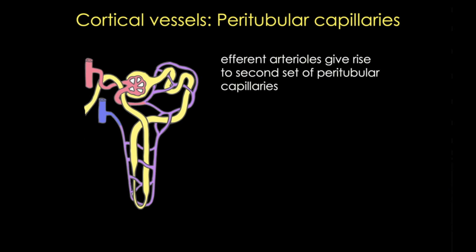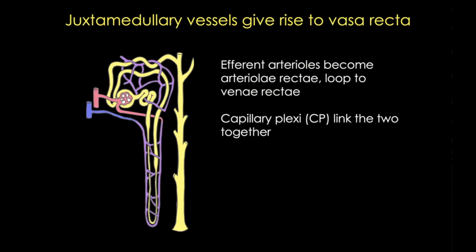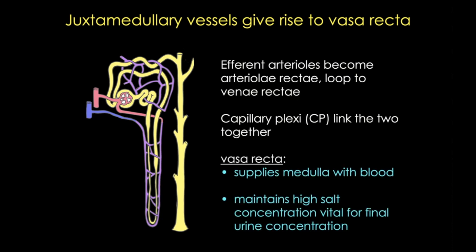Peritubular capillaries arise from the efferent arterioles of cortical nephrons. In this image, you can see both the renal corpuscle and the top of a proximal convoluted tubule, and some of the capillaries surrounding it. With the juxtamedullary nephrons, the efferent arteriole becomes the arteriolae rectae, then loops to become the venae rectae, and the capillary plexi in between link the two.